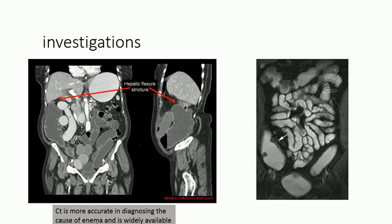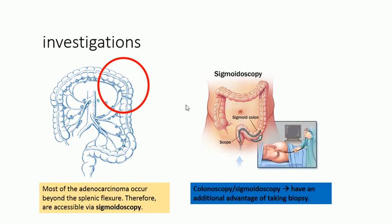On CT scan you can see a hepatic flexure stricture — an accurate diagnosis with localization. MRI can show bowel wall thickening. Adenocarcinoma, one of the major causes of obstruction, mostly occurs beyond the splenic flexure and is therefore accessible via sigmoidoscopy — an invasive but good investigation that can travel through the sigmoid to visualize the adenocarcinoma.